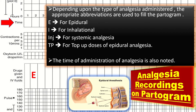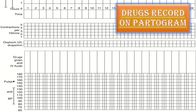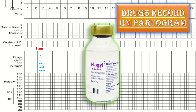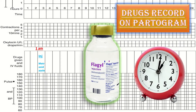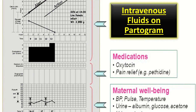Any drug administered during labour is entered in the appropriate square according to the time of administration — for example, injection metronidazole at 1 a.m. The type and the quantity of IV fluid administered are also noted in the appropriate square of the partogram.